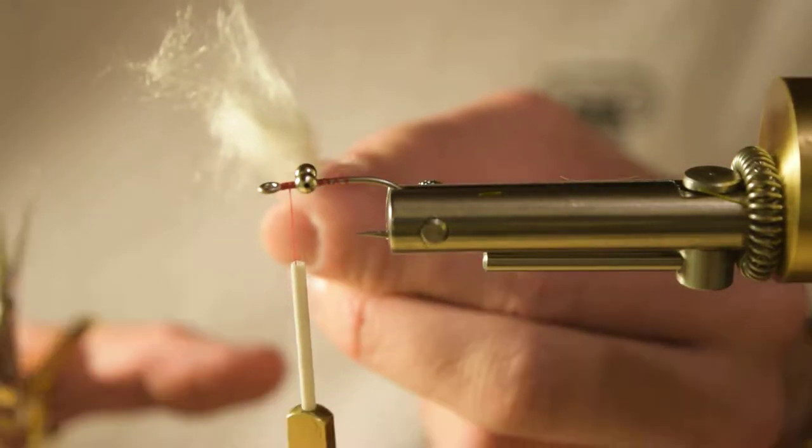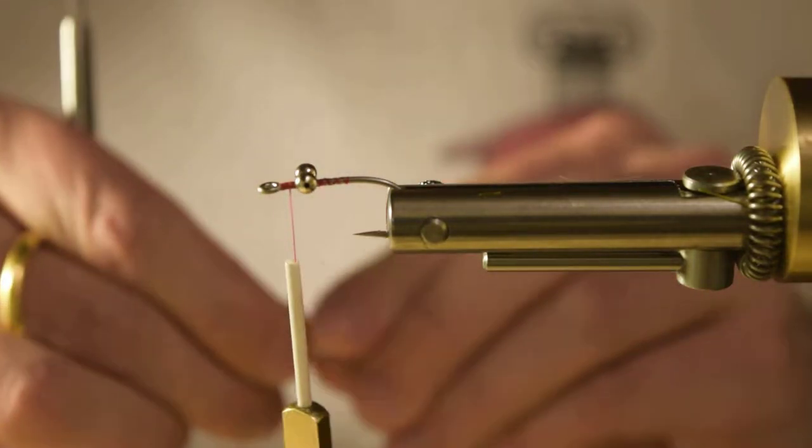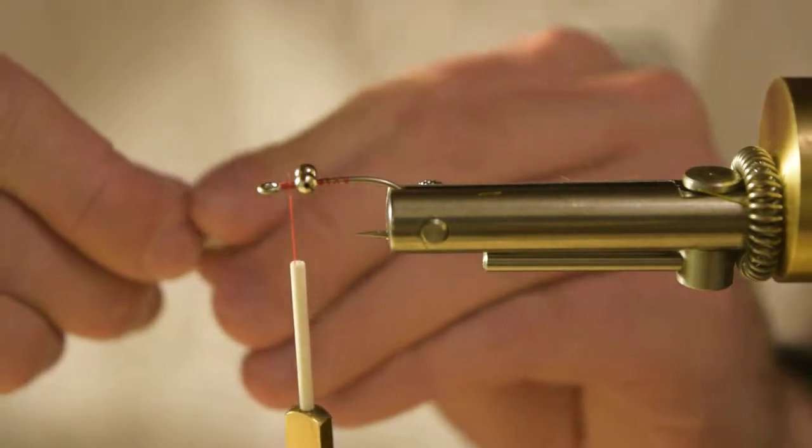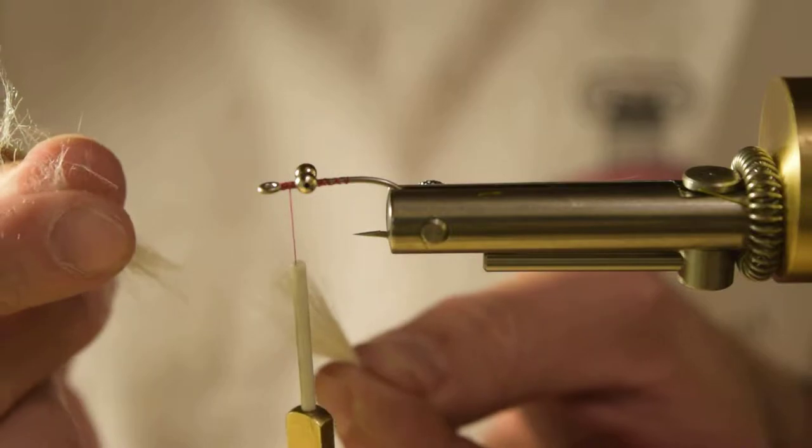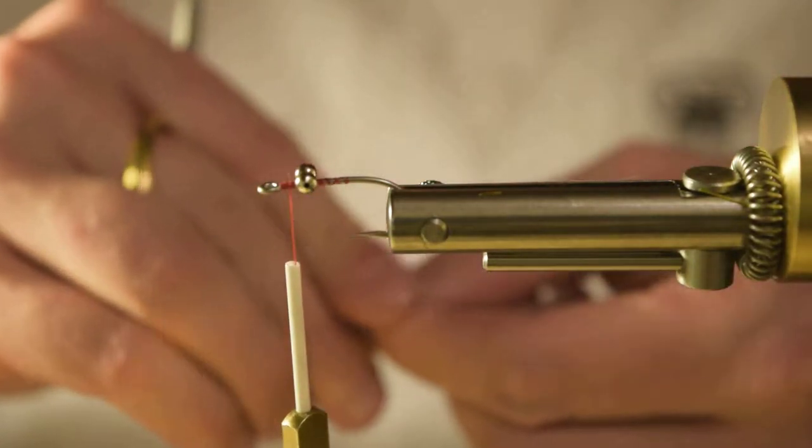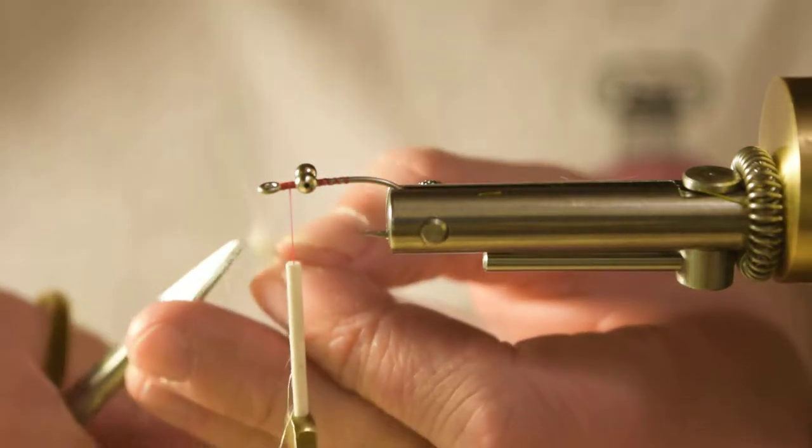You can see all this real thick underfur. We can't really tie that in because it's going to be really bulky. So I'm going to grab it by these longer fibers and pull all that underfur out. Just like that. All that bulky underfur came out. Just throw that in the trash. I'm going to come in and make a nice even square cut.